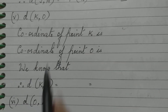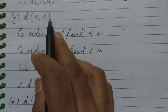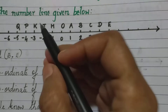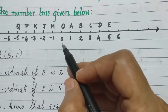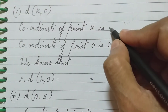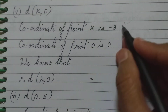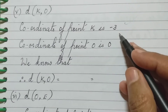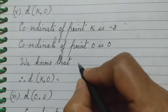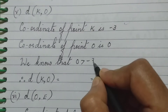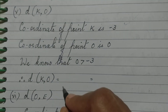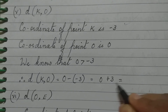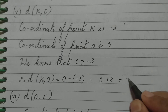Fifth sub-question: distance between points K and O. The coordinate of O is always 0. The coordinate of point K is minus 3. Negative numbers are always smaller than 0, so 0 is greater than minus 3. Therefore, the distance between K and O is 0 minus (minus 3), which is 0 plus 3. Zero plus any number is the number itself, so the answer is 3.